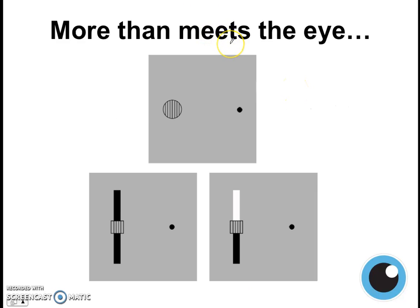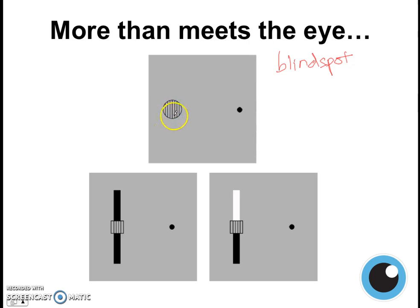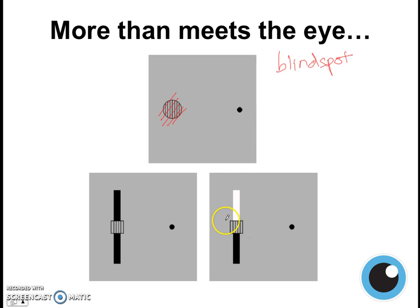There's more than meets the eye — another example of the brain helping us to see is with these images that help you identify your blind spot. If you focus on this dot, cover one eye, and move your face away from the screen, at some point you will see this shape disappear because the image of it is falling on your blind spot. But instead of seeing a dark blotch of nothing there, your brain will actually help you to see it as a gray area — it fills up the blind spot so that you see gray instead of nothing. This is another example of how your brain helps to process information so that you see things in a certain way.